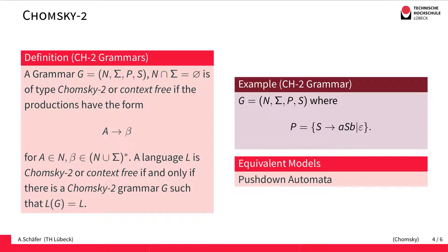For the next class, the Chomsky two grammars or context-free grammars, we restrict the allowed productions even further. The productions must be context-free, meaning they may not have any context to the left or to the right. We simply remove the alphas and allow only productions of the form where we replace one non-terminal A by one string of terminals or non-terminals beta. The example on the right-hand side is also a context-free grammar, and you can easily figure out what kind of language it generates. The equivalent machine model is the pushdown automaton.